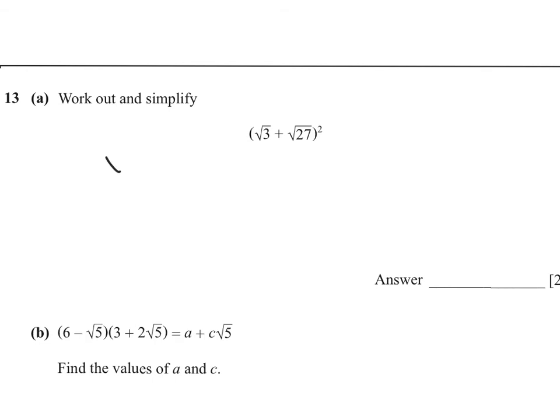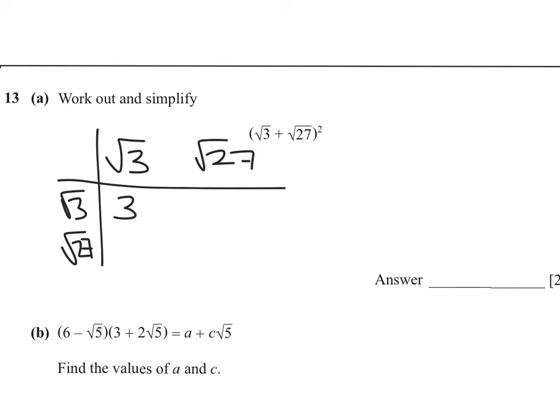If we start by expanding the brackets, square root of 3, square root of 27. Square root of 3 times the square root of 3 is 3. Square root of 3 times the square root of 27, 3 times 27 is 81, so it's the square root of 81, which is 9. Root 27 times root 3, we've just shown, is 9. And the square root of 27 times the square root of 27 is 27. So we want to do 3 plus 9 plus 9 plus 27, which gives an answer of 48.